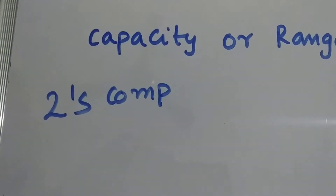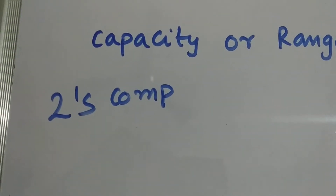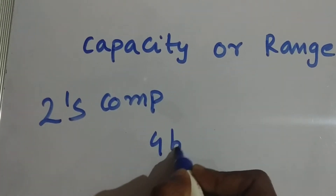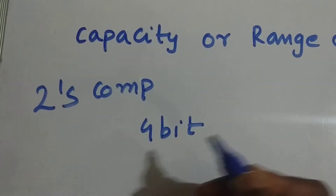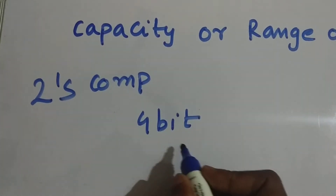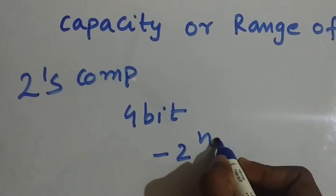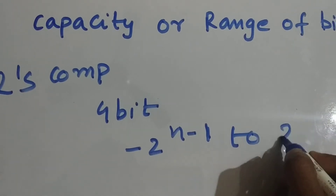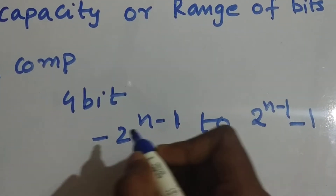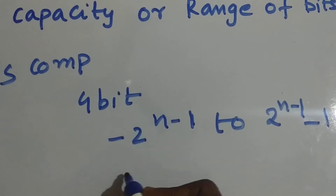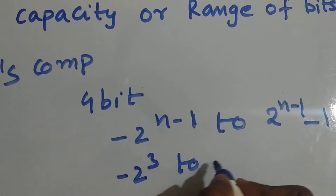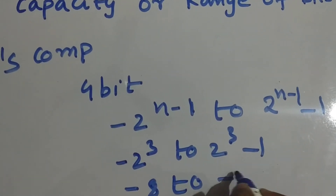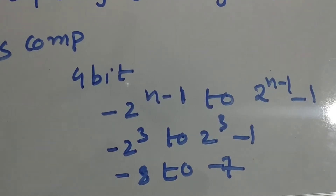Now let's look at overflow in two's complement. Say we have four bits. In two's complement the range is from minus 2^(n−1) to 2^(n−1) − 1. For four bits that means minus 2^3 to 2^3 − 1, which is minus eight to plus seven. So the four-bit two's complement range is minus eight to plus seven.